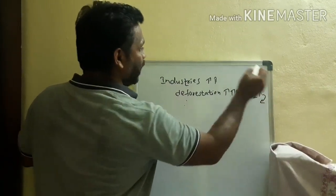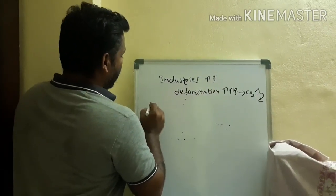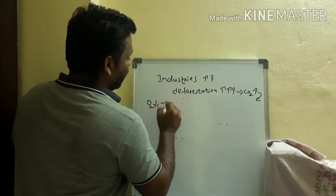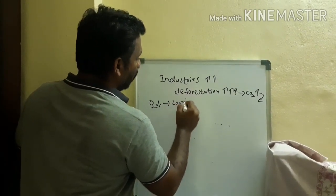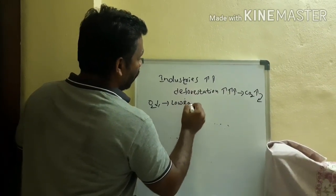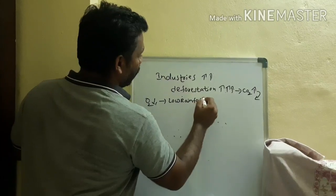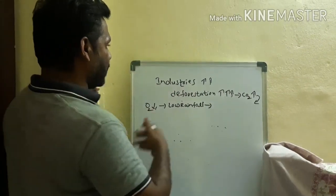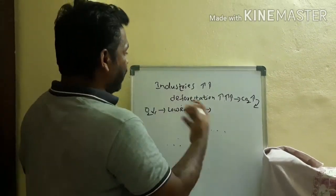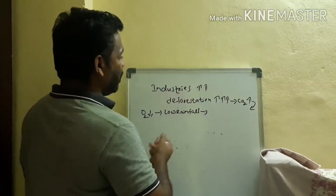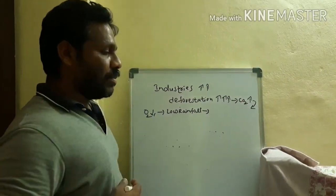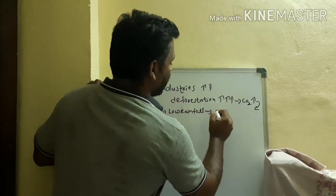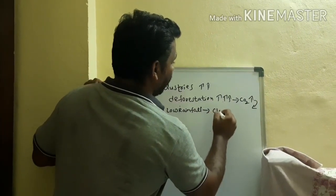When CO2 increases, what will happen? It will decrease rainfall — low rainfall. It is a continuous process which will happen to us and affects more and more. When it increases, it leads to global warming. Due to this heating of the temperature, global warming causes more and more of the ice caps to start melting.